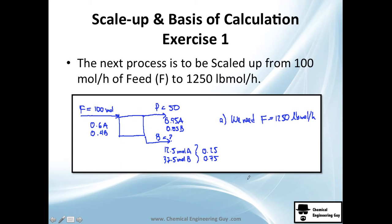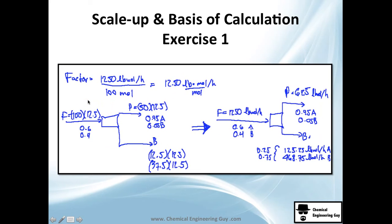Let's do an exercise. The next process needs to be scaled up from 100 mole to 1250 pound per hour. It's easy. We have this process here. We don't actually need to solve it, we just want to scale it up. The factor that I'm going to use for scaling is simply the desired amount divided by the actual amount. The actual feed amount is 100 and the desired amount is 1250 pounds per hour.